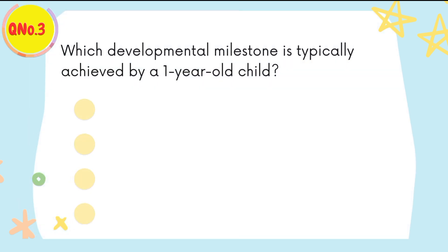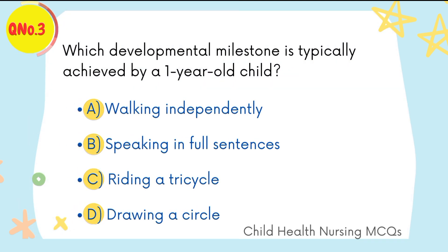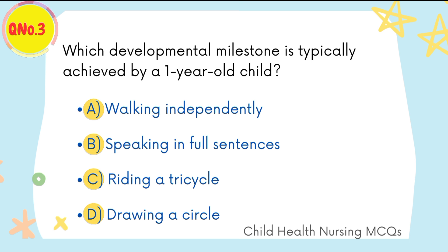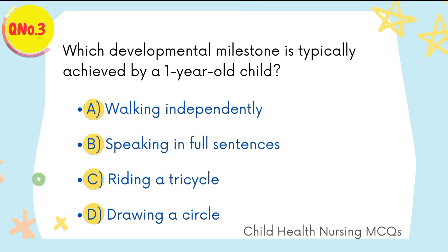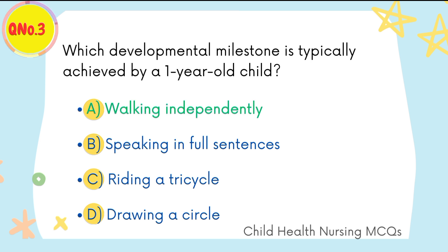Question number three: which developmental milestone is typically achieved by a one-year-old child? A is the right option: walking independently.